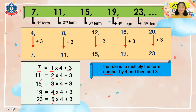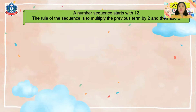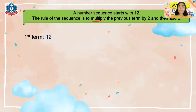We can also write this rule as a formula: 4n + 3, where n is the term number. For the first term, n = 1: 4×1 + 3 = 7. For the second term, n = 2: 4×2 + 3 = 8 + 3 = 11. Now here is another example: a number sequence starts at 12 and the rule is to multiply the previous term by 2 and then add 2. The first term is 12. To get the second term, we multiply 12 by 2 and add 2.